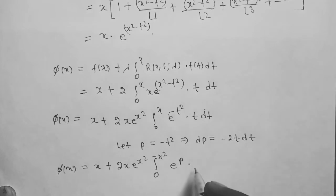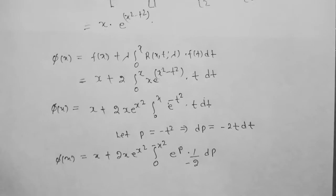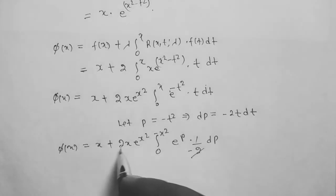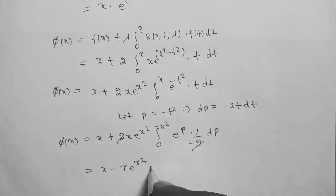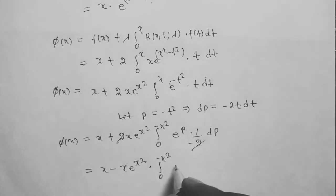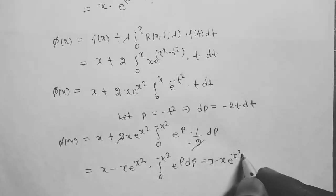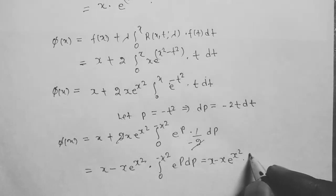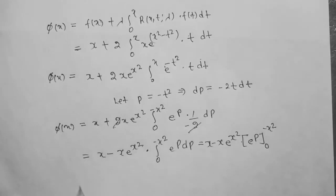So φ(x) = x plus 2x·e^(x²)·integral from 0 to −x² of e^p·(1/(−2)) dp. The 2 and −2 cancel partially, giving x·e^(x²) times [e^p] from 0 to −x², which equals x·e^(x²)·(e^(−x²) minus 1).